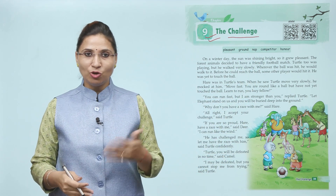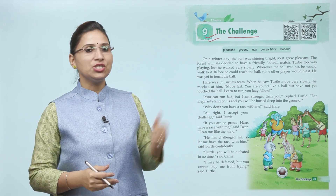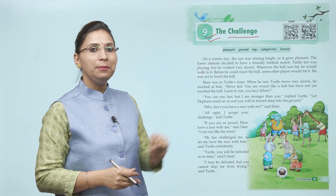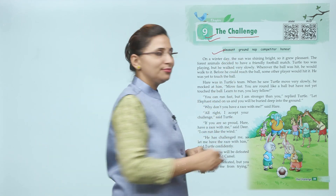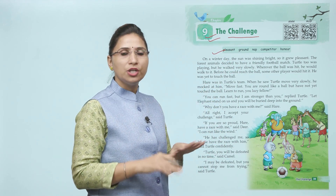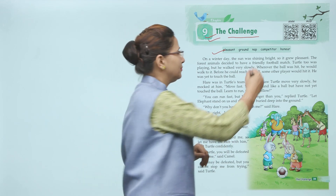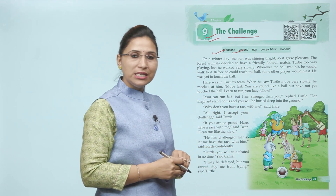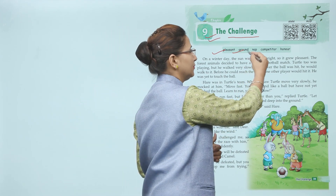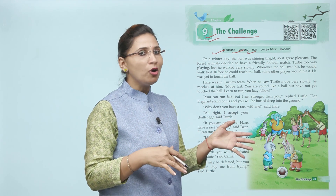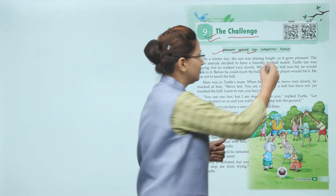First word: pleasant — pleasant means very beautiful, bohut sundar. Ground means zameen. Nap means choti si neend — thoda sa sote hain to nap lete hain. Competitor — jis se aap competition karte ho wo aapka competitor hota hai.